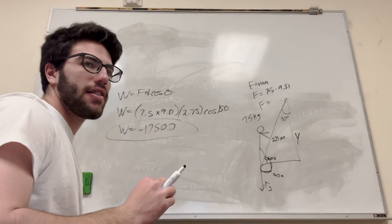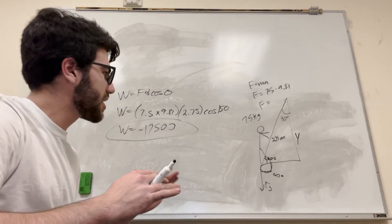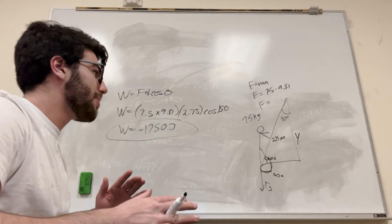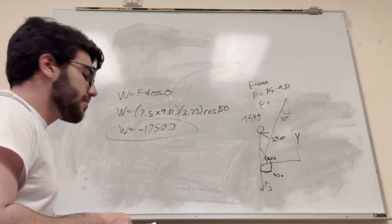It makes sense, because gravity is trying to push him down. If you're going down, the work of gravity is going to be positive. But he's going up, so he's kind of working against gravity. So gravity is getting worked upon, basically, by this guy. Okay, next part.